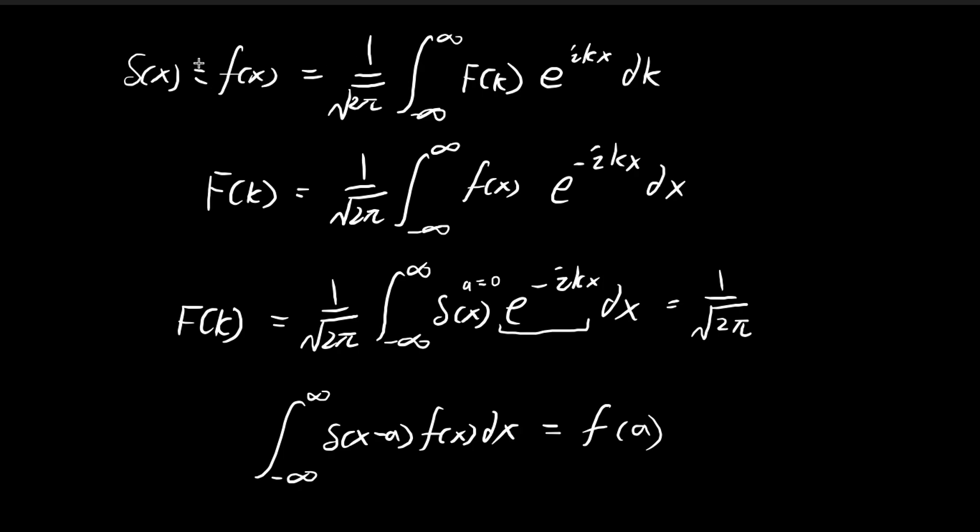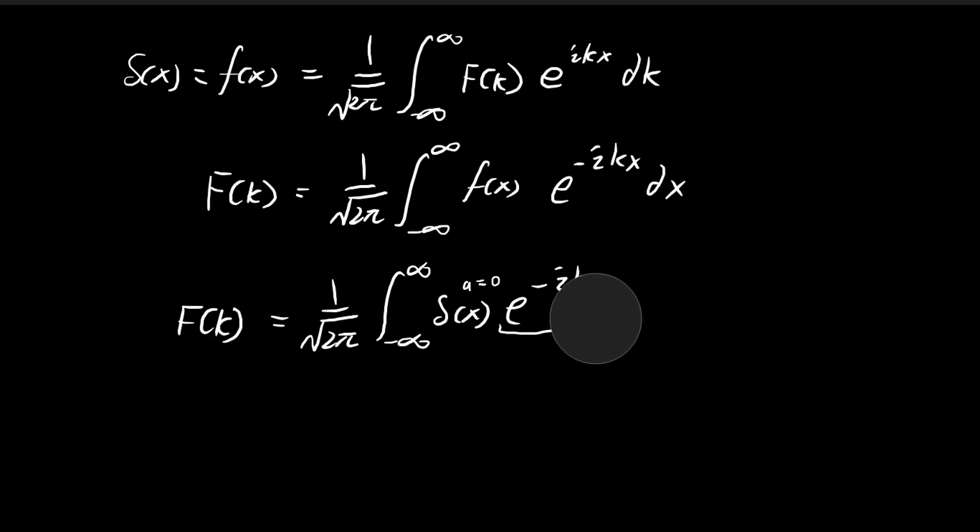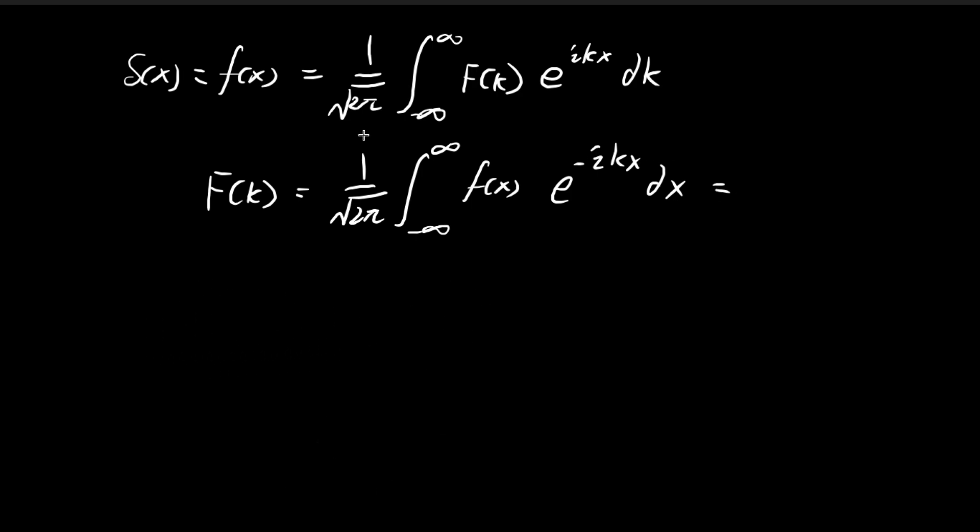And then now we can substitute this back into this formula to see how we can express the Dirac delta function using Fourier transform. So we found that f of k is equal to 1 over the square root of 2 pi. And so that means our function f of x, so the Dirac delta function is equal to, so we're going to use this expression again.